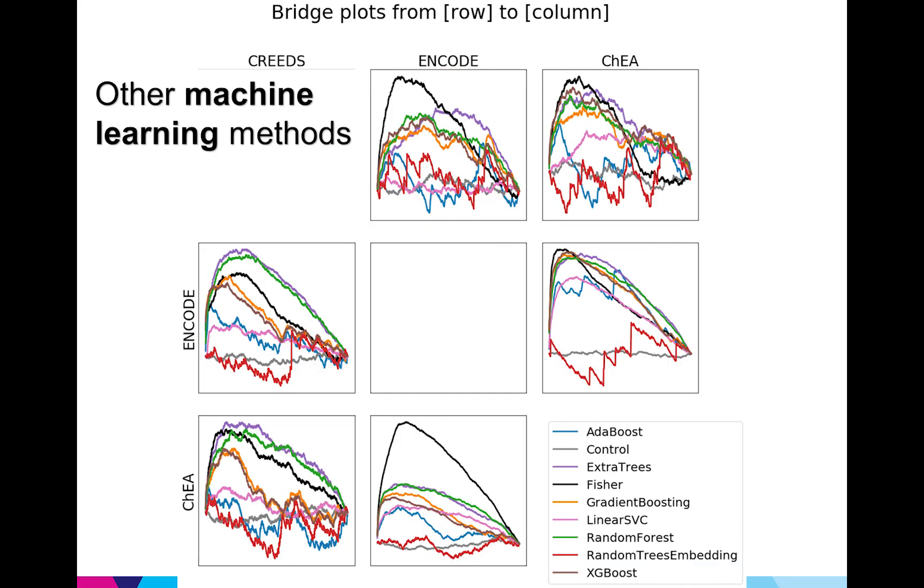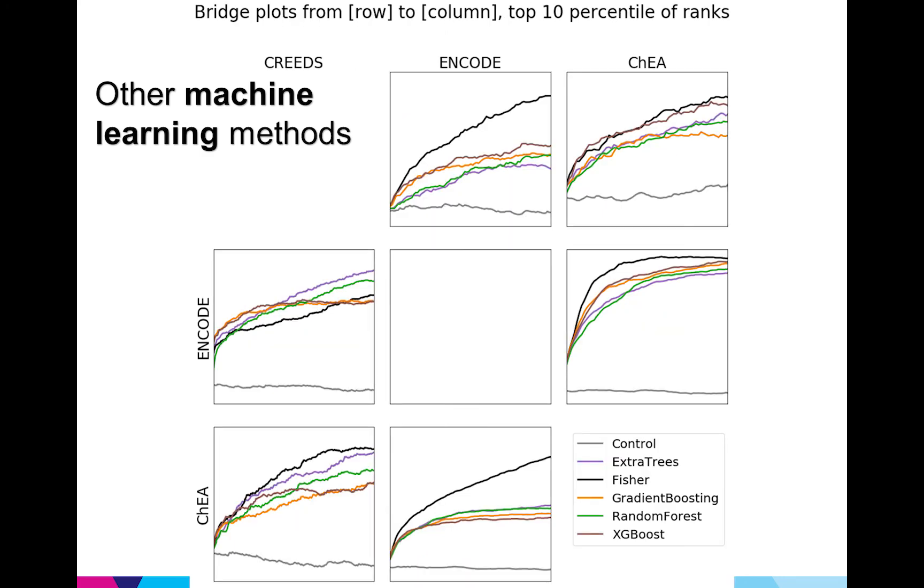I looked at other machine learning methods but in order to kind of narrow down the list I zoomed into the top 10% of ranks. So just like we only look at the first few pages of Google search, the top 10 percentile of ranks are going to be the most important. So from here I was able to narrow down the list to random forests, extra trees, and the two types of gradient boosting. So I think these algorithms might be very promising with some hyperparameter tuning.